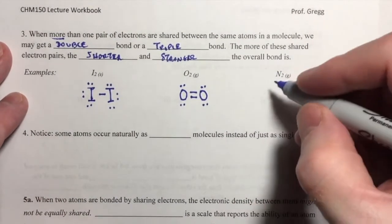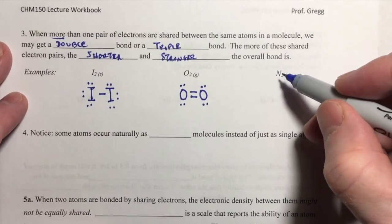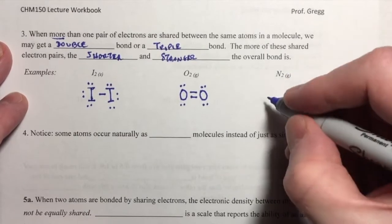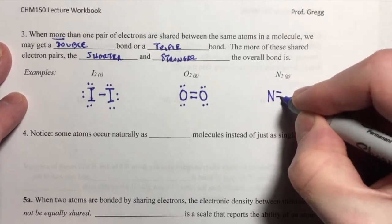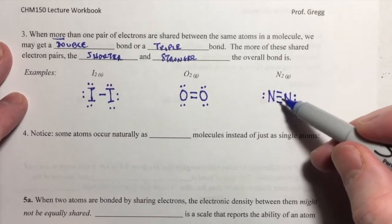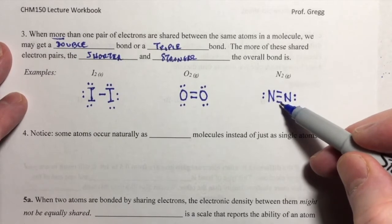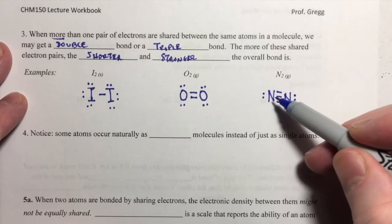And if we continue on to N2 nitrogen gas, this is the neutral diatomic molecule for the element. We see that we have a triple bond there. So two, four, six, eight electrons around that nitrogen.